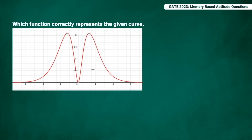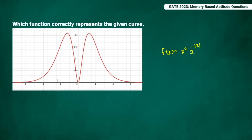This question asks which function correctly represents a given curve. Although exact values aren't given in the question paper, I plotted it using a web tool. The correct answer is f(x) = x² · e^(2^(-|x|)). This is a function made up of two parts: x² ensures all values are positive, and e^(2^(-|x|)) ensures you get a mirror-symmetric form. That's the correct answer for this question.